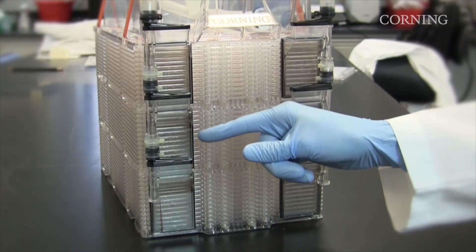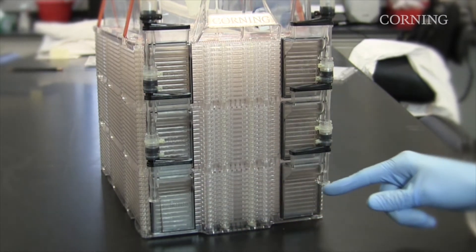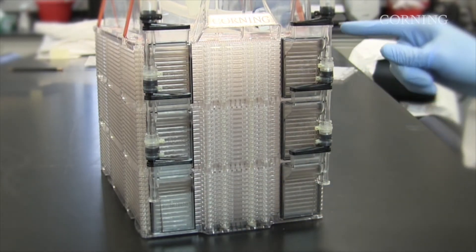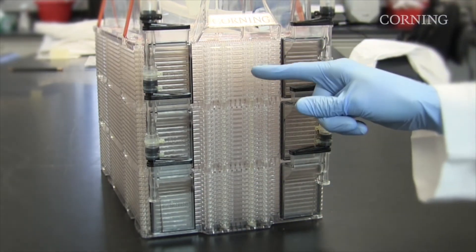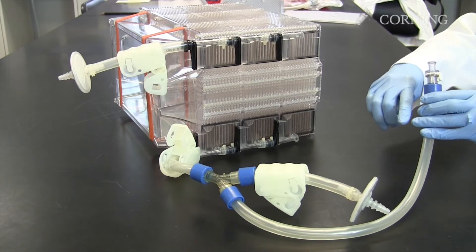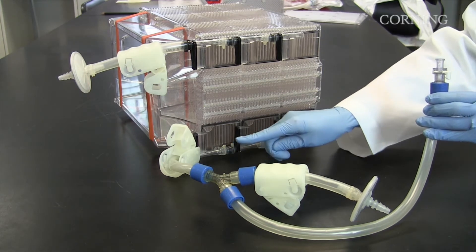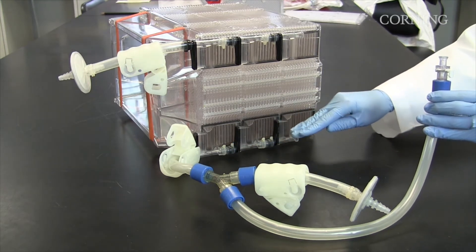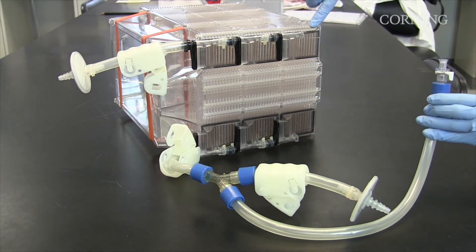The stackettes are connected by two manifolds to form a module. The HyperStack 36 vessel has three modules with 12 stackettes in each module. Liquid moves in and out of the vessel through the liquid manifold. Air moves in and out of the vessel through the air manifold.